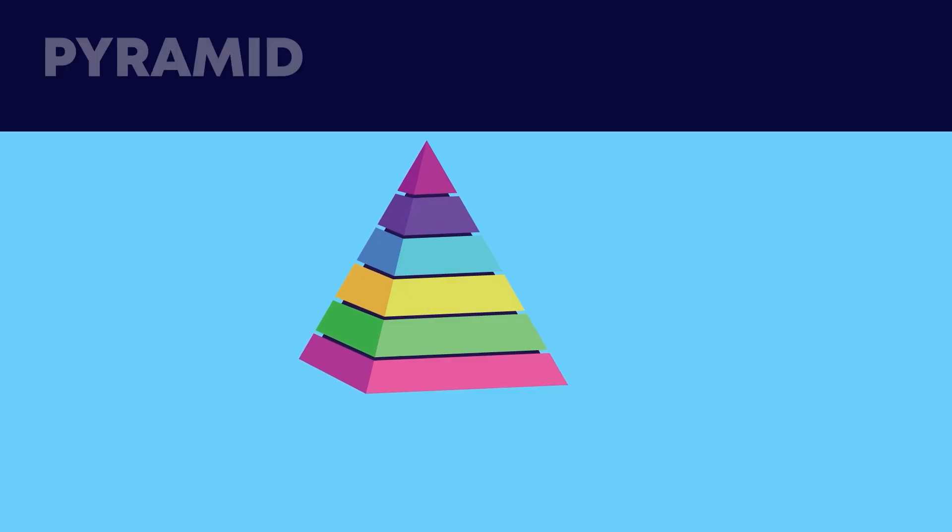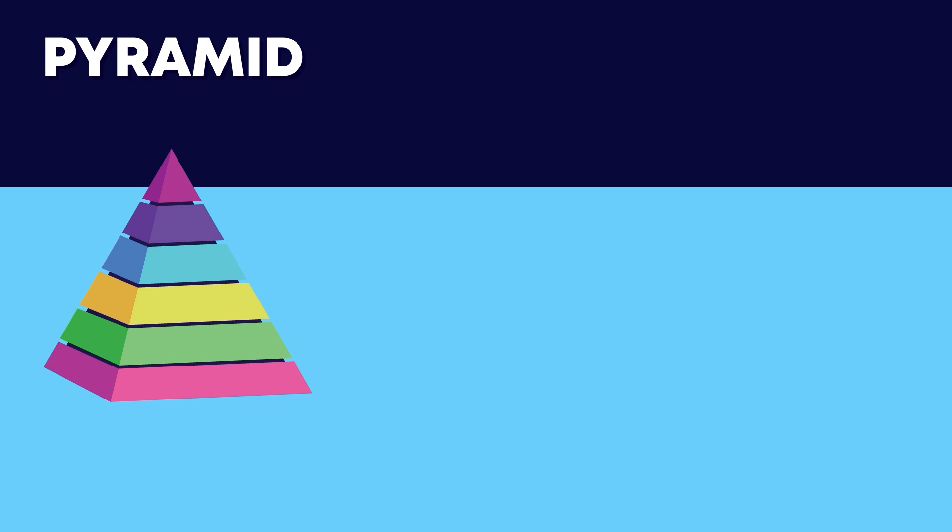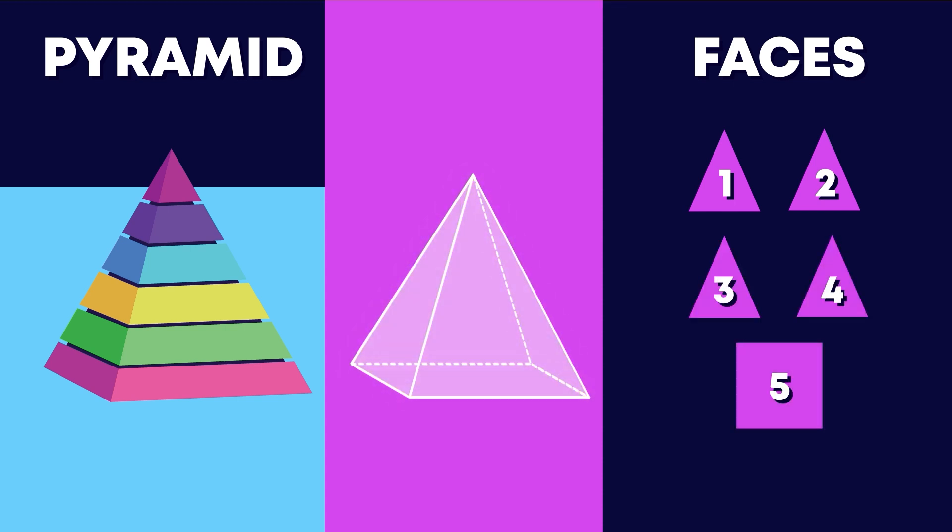3D shapes like this pyramid can be held. Flat surfaces of a 3D shape are called faces. This pyramid has 1, 2, 3, 4, 5 faces.